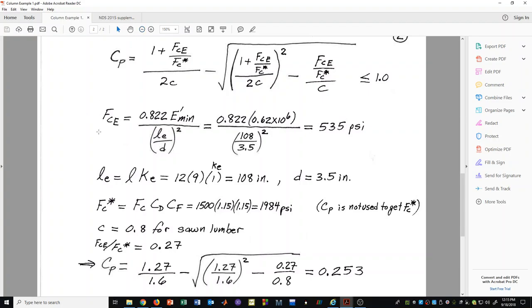First off we need to calculate F sub CE. That is accomplished by this formula here. This formula really is based on Euler's buckling formula. It may look a little different, but it basically comes from that idea of Euler buckling.